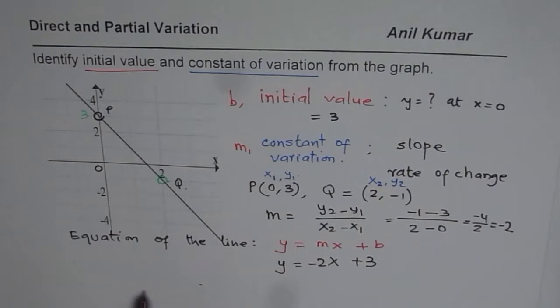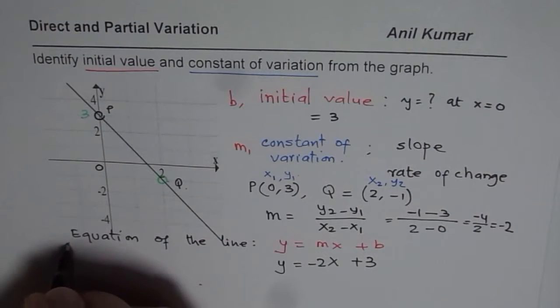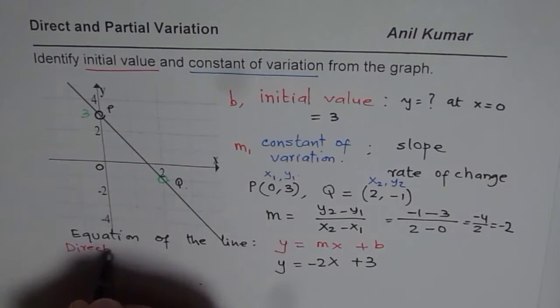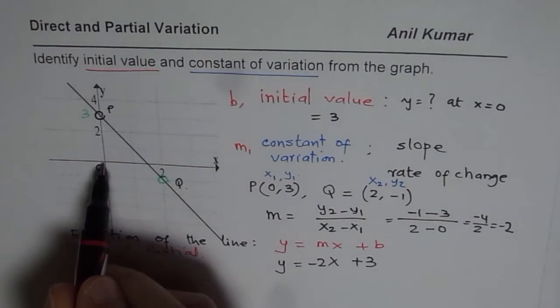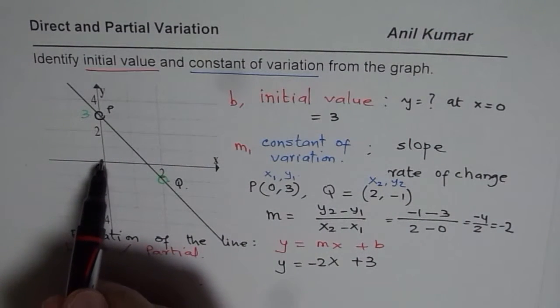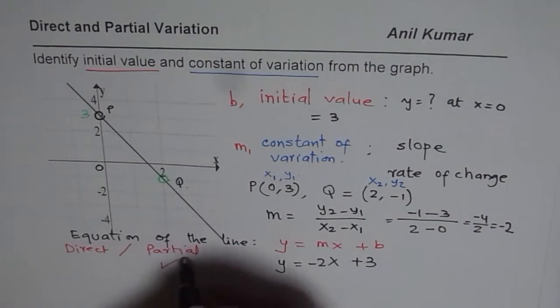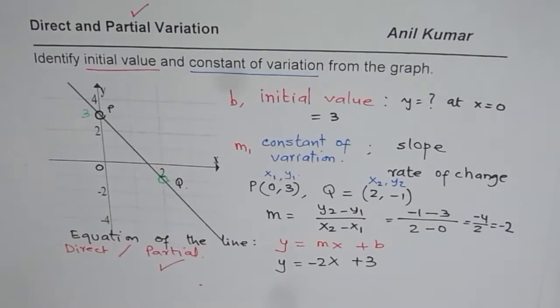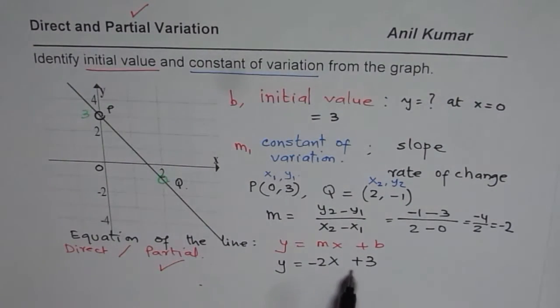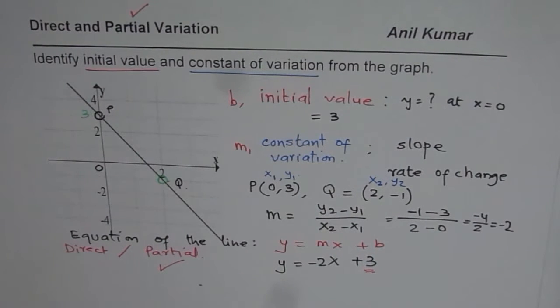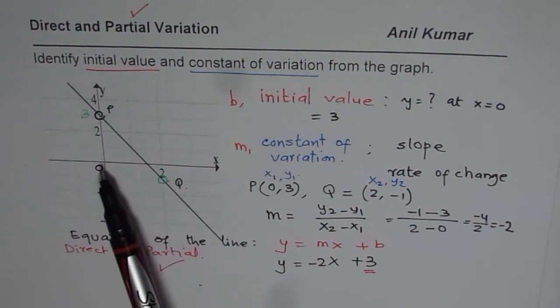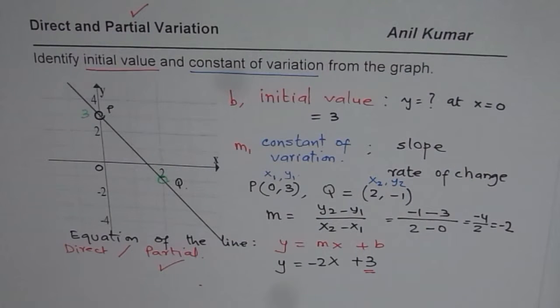Now, the question for you is: is this variation direct or partial? So you have to figure out whether this relation is direct or partial. You can check the y-intercept. If y-intercept is not 0, then it is partial. In this case, it is partial variation. The equation is y = -2x + 3. In a partial variation, this value will always be non-zero. That is what makes it partial. The line is not going through the origin. That is another way of looking at it.